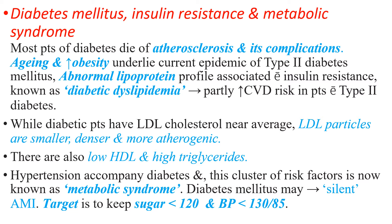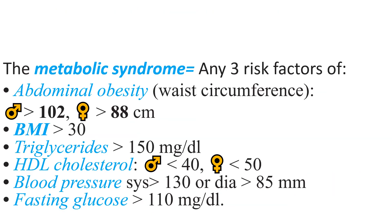Target is to keep fasting sugar less than 120 and blood pressure less than 130/85 mmHg. The metabolic syndrome is diagnosed when any three of these five risk factors are present: abdominal obesity (BMI more than 30), triglycerides more than 150, HDL cholesterol less than 40 in males or less than 50 in females, blood pressure systolic more than 130 or diastolic more than 85, and fasting glucose more than 110.